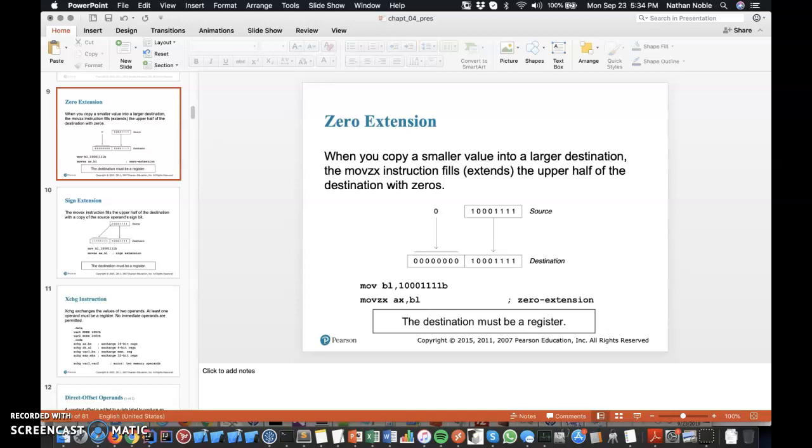That essentially, and then if we were to also set the upper part of that register to zero, we'd have to do two things there, not just one. So we would have to set the upper part of the register to zero, or the entire register to zero, and then do the MOVE. But instead of doing two or three different instructions to accomplish that, the zero extension allows us to just write one line. So MOVE ZX allows us to move the value that we have in BL into the AX register, and it essentially sets the upper part, the AH portion of the AX register, to zero.